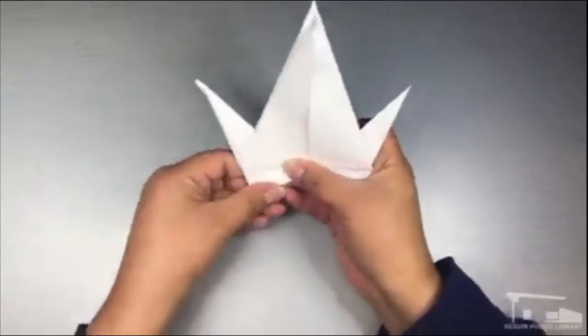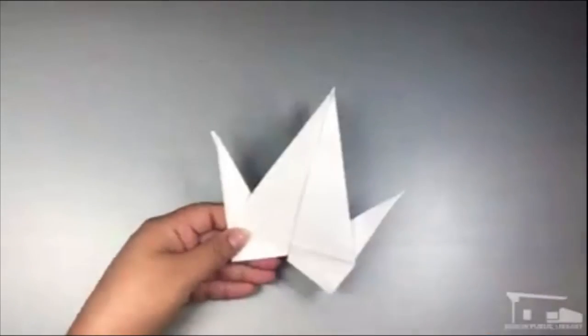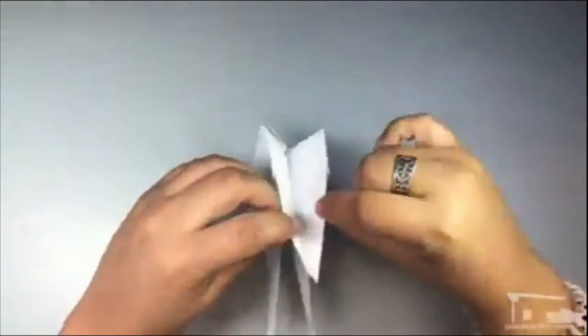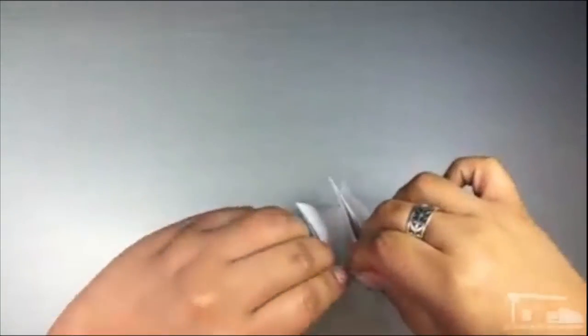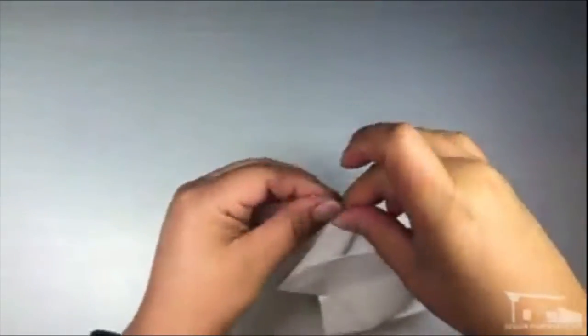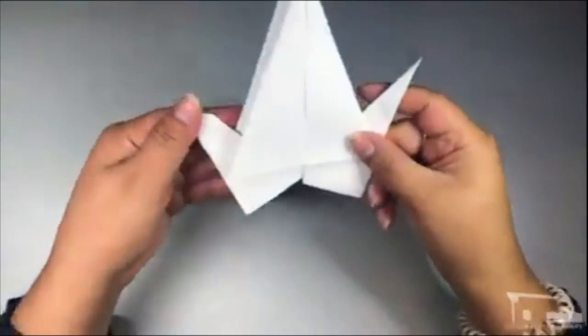Now take one of the points and repeat the same process you used on the halves to create a head on one of our points. Use your thumbs to gently pop the tip back and down, folding the sides in to hold it in place.